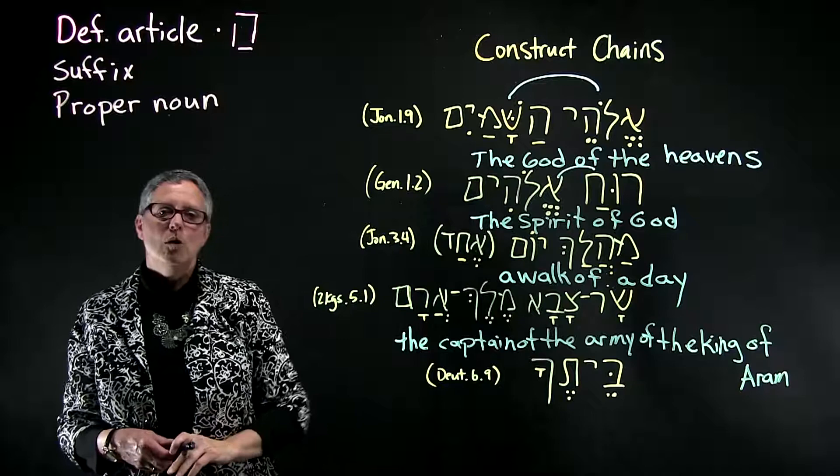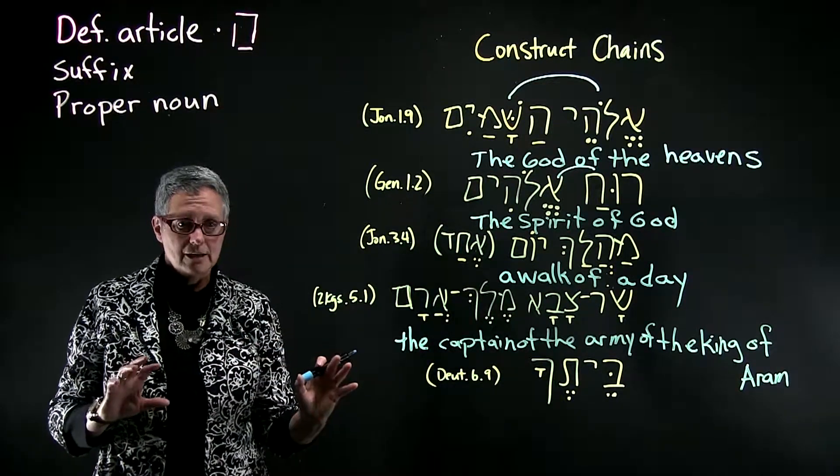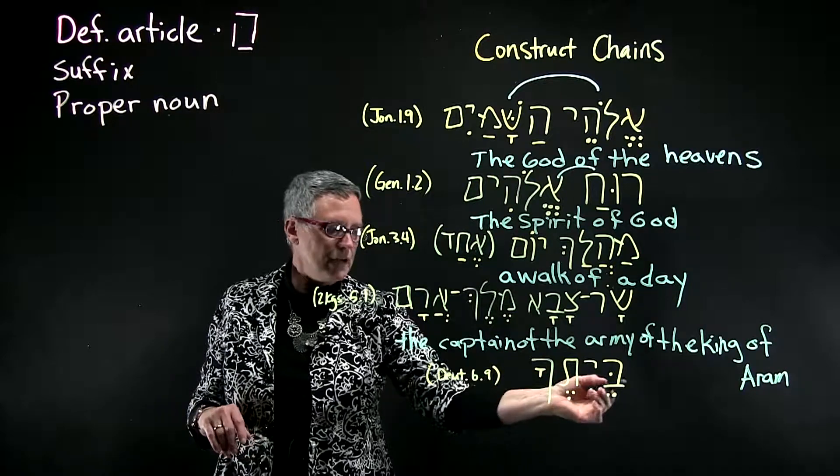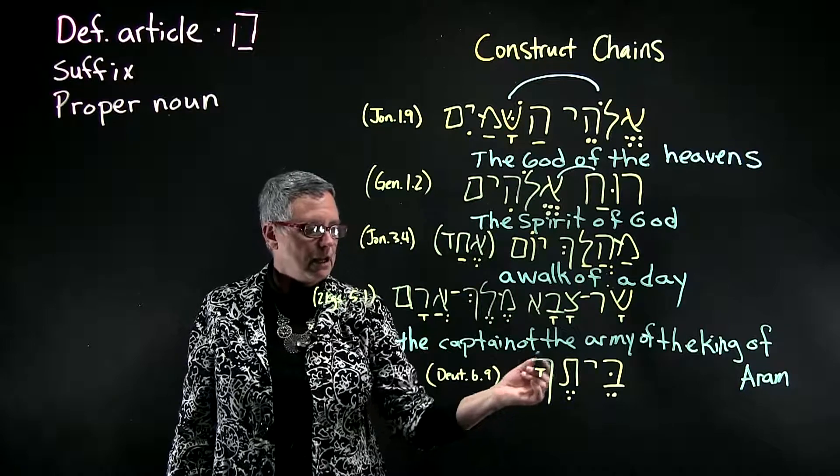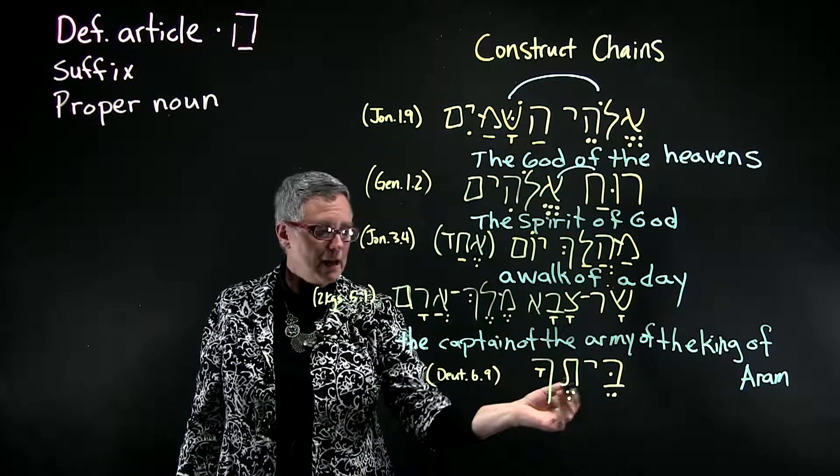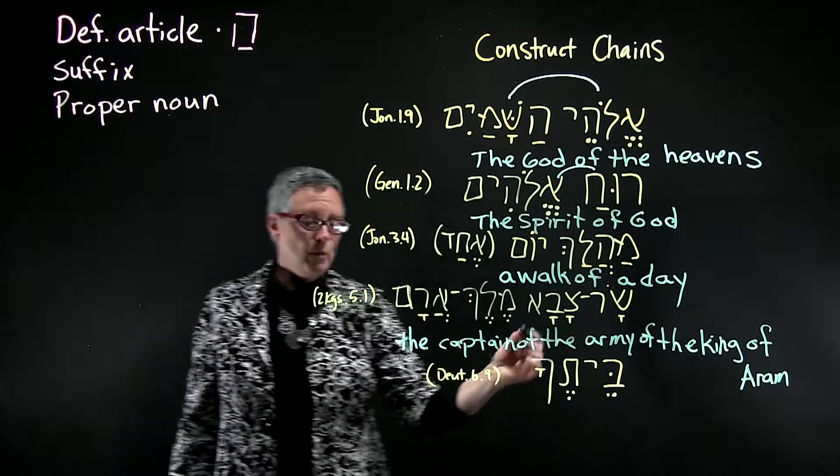And one more situation that doesn't necessarily look like a construct chain. But if you have a noun with a suffix on it, that also is a construct chain. So beitecha, house of you. You know that often when there's a suffix, we'll use 'of'.